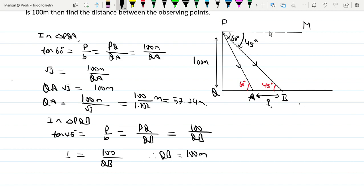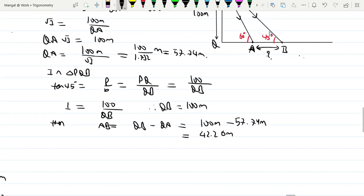AB equals QB minus QA. So QB is 100 meters and QA is 57.74 meters. So 100 minus 57.74 equals 42.26 meters. Therefore, distance between observing points is 42.26 meters.